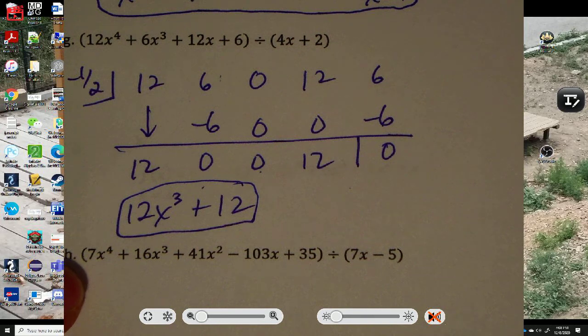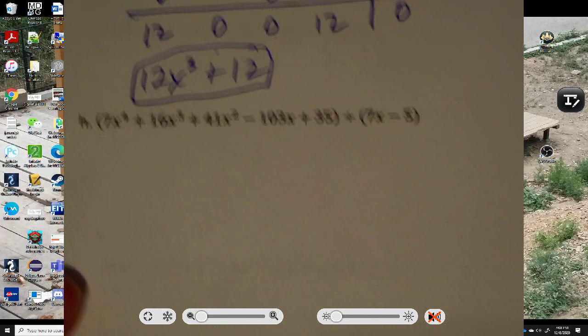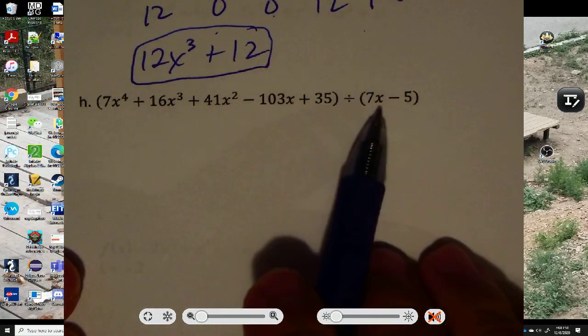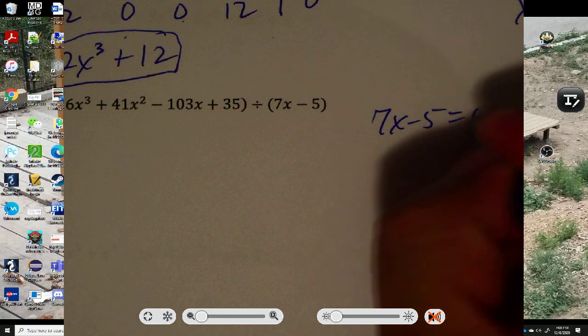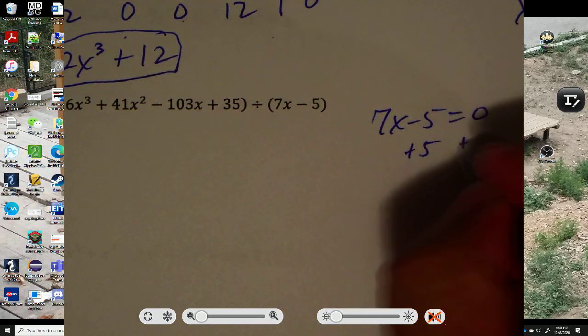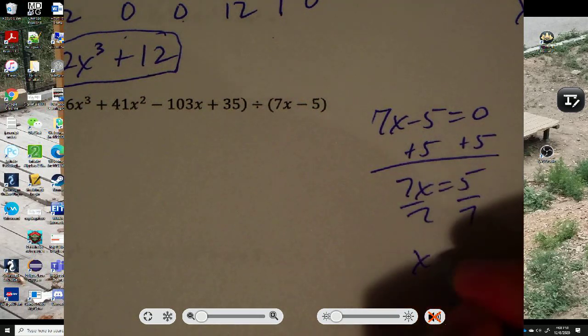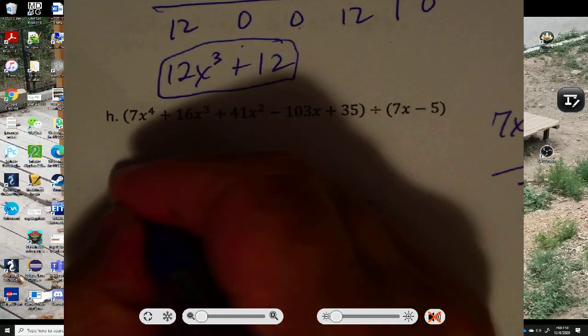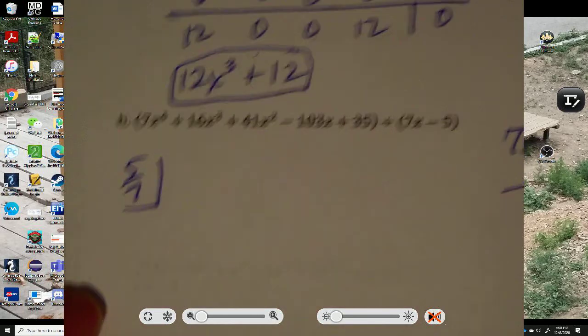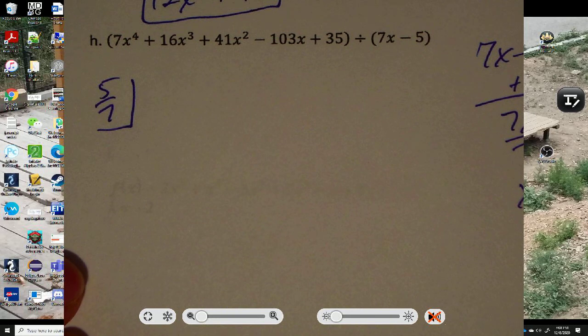Last example in synthetic division. So this is going to end up being 5 7ths. I'll go ahead and show you how about 5 7ths. So 7x minus 5 equals 0. Add 5 to both sides. And I get 7x equals 5. Divide by 7. And I get x equals 5 7ths. So I'm dividing by 5 7ths. So I put a 5 over 7 here. I know some of you are weak with multiplying or with fractions. You are allowed to use a calculator. I encourage you to use a calculator.